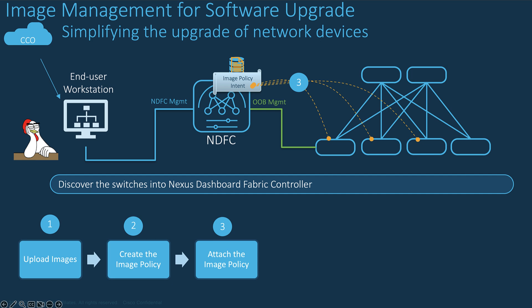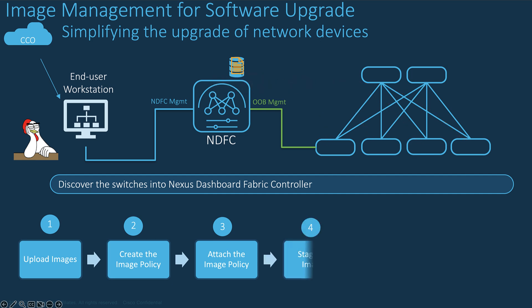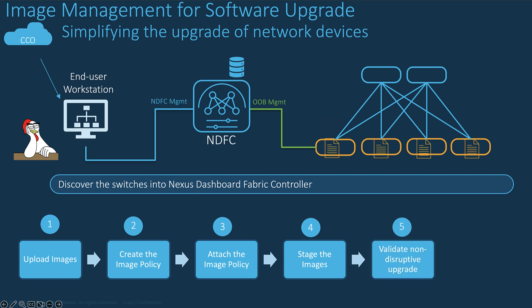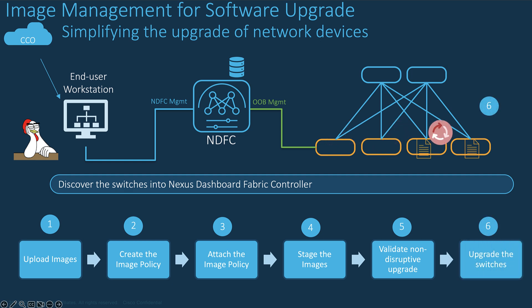Then you need to attach the image policy to the switch. After attaching it, you need to stage the image — the files are copied into the boot flash of the target switch. Optionally, you can validate if the switches support a non-disruptive upgrade and NDFC will perform a compatibility check. You can also create a report with details about the switches and the pre-ISSU and post-ISSU state. When ready, you can deploy the upgrade either immediately or later.